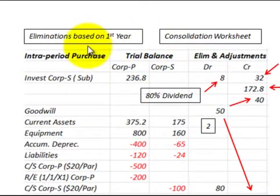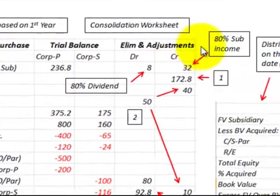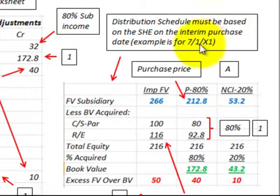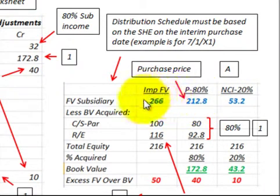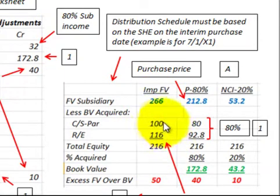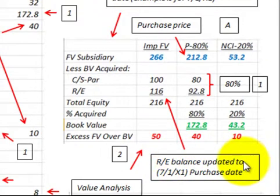Next we look at our eliminations, based on the first year. Starting with our distribution schedule — the distribution schedule must be based on the shareholder's equity on the interim purchase date, which for this example was July 1st of year X1. The parent bought 80% for $212,800, so the implied fair value at 100% would be $266,000, and the non-controlling interest would be $53,200, or 20% of the implied fair value. Total equity was based on common stock and retained earnings for the subsidiary, and importantly, the retained earnings balance had to be updated to the 7-1 purchase date.